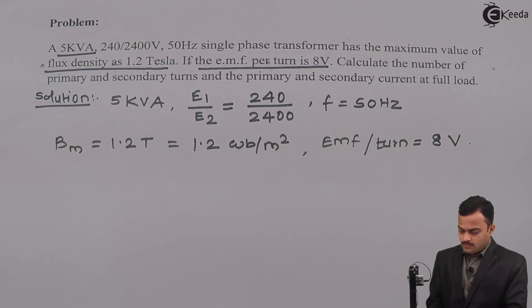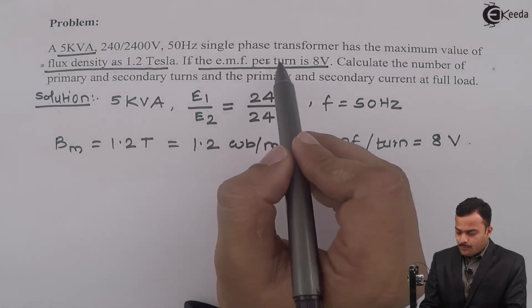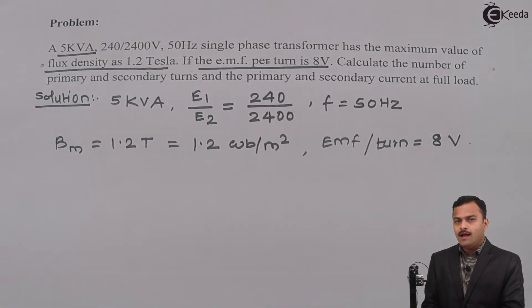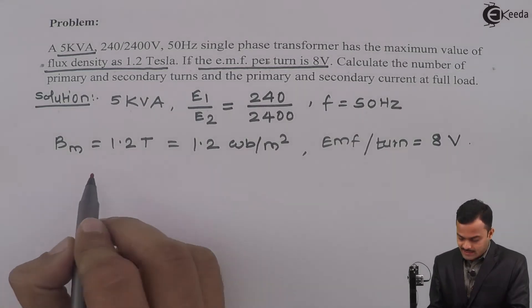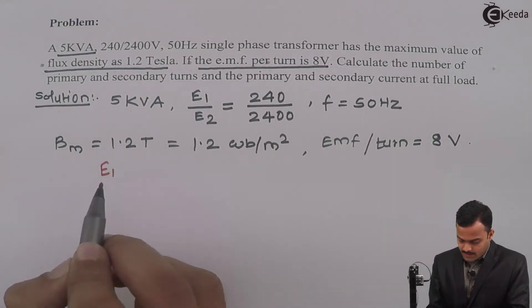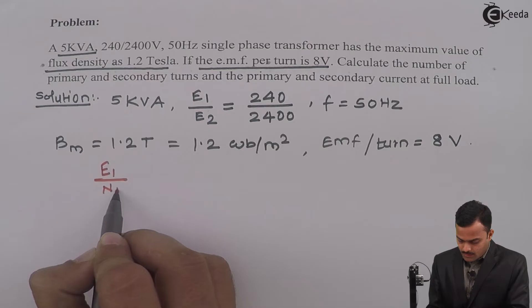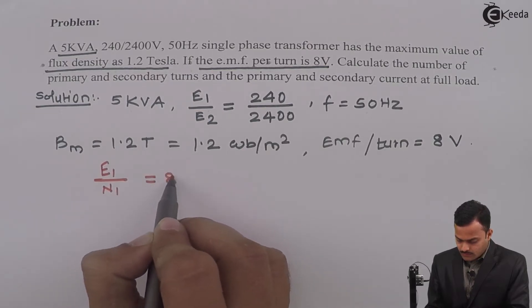Now, look at this term. EMF per turn is 8 volt and EMF per turn will remain same for primary as well as secondary side. What does that mean? Now, I can say this EMF per turn for a primary side is E1 upon N1 equal to 8.